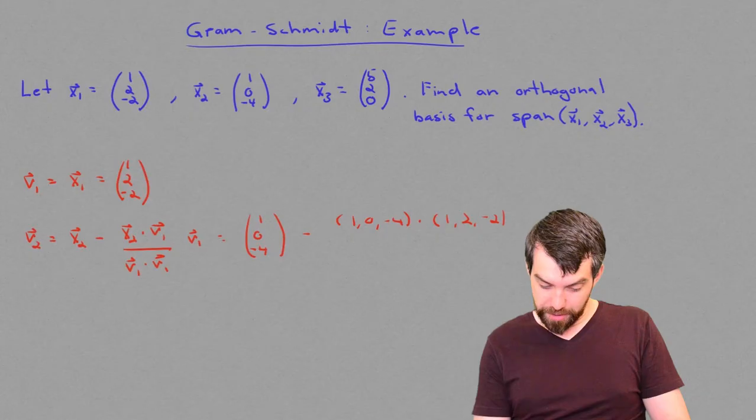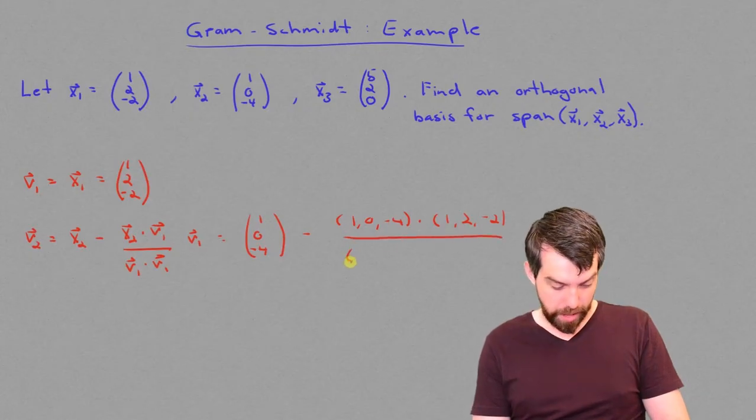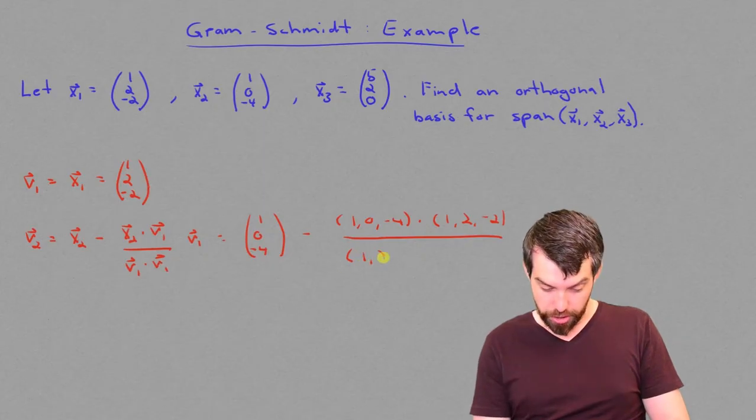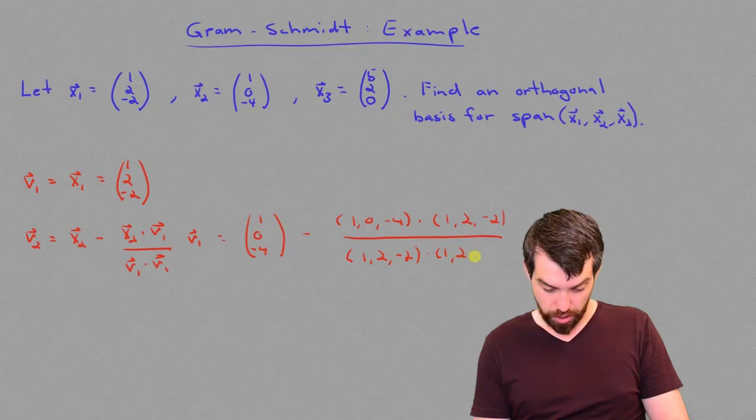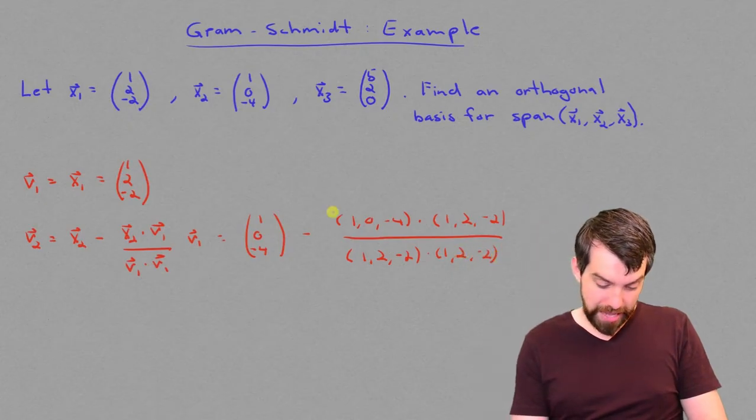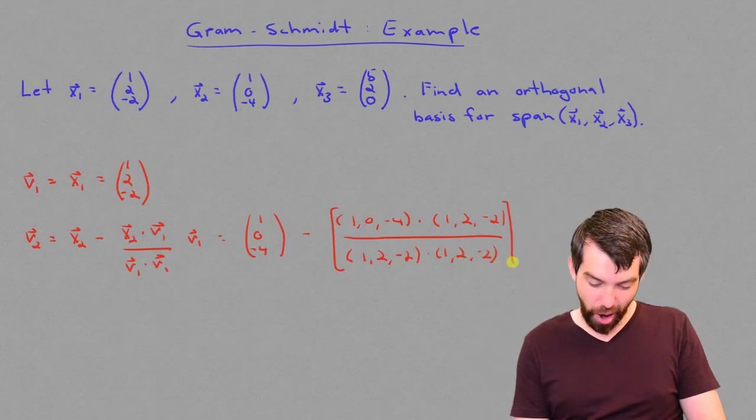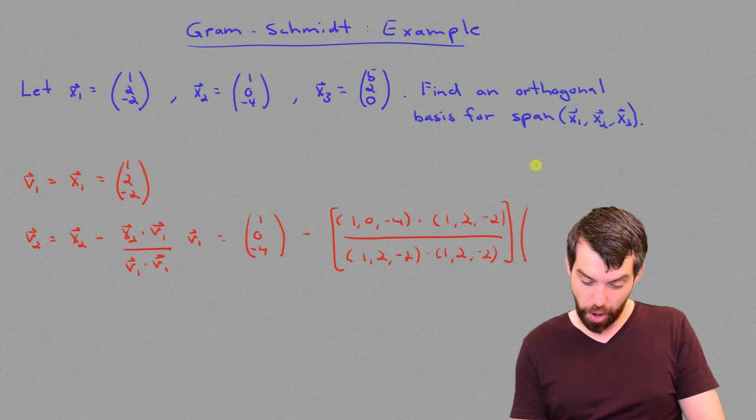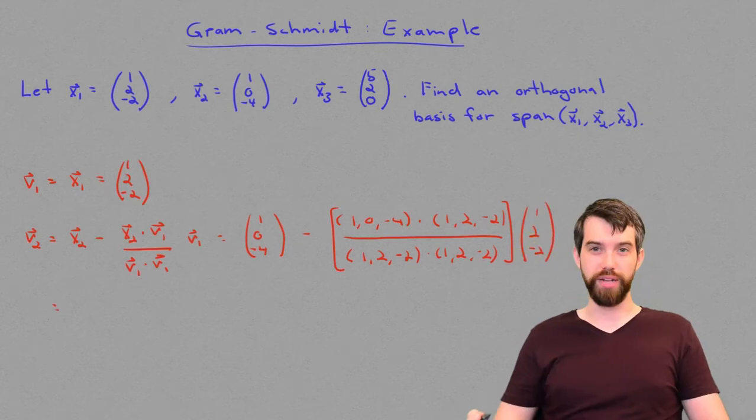And then I'm dividing all of this by v1 dotted with v1, so 1, 2, minus 2, dotted with 1, 2, minus 2. And then that's a big coefficient, and all of it, and I'll write it again vertically here, is going to be in the v1, 1, 2, minus 2.